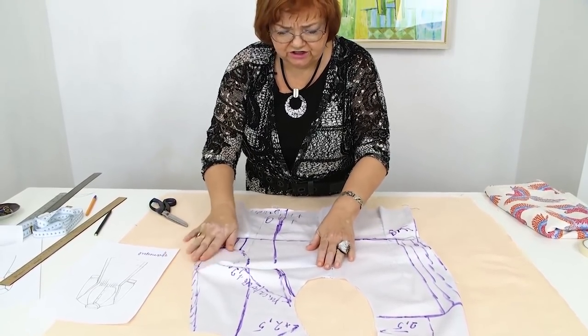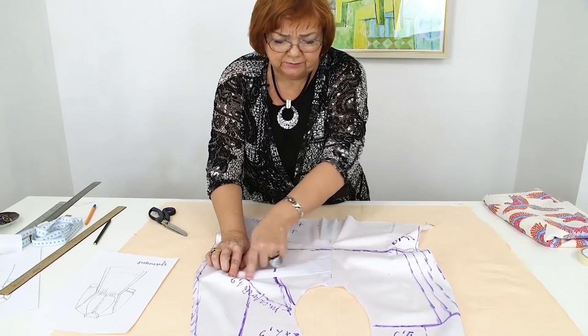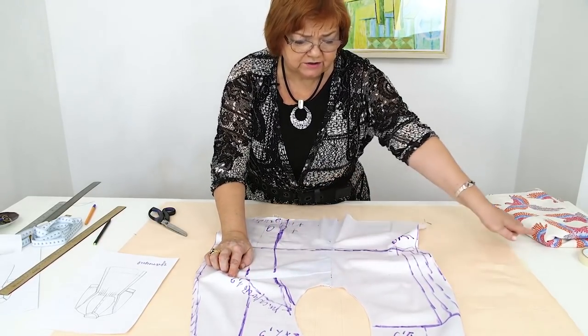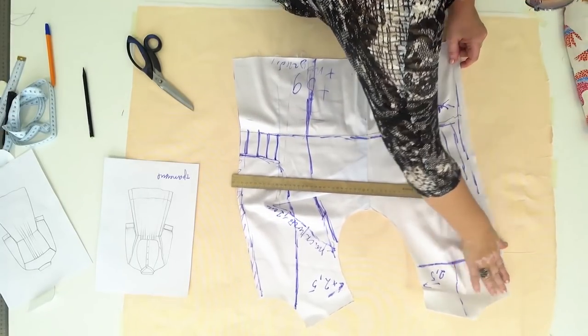That means that I need to move the side seam a bit closer to the front. I don't want the chest dart to be that close to the back. I need to cut the center back seam allowance. I don't need it in the pattern.